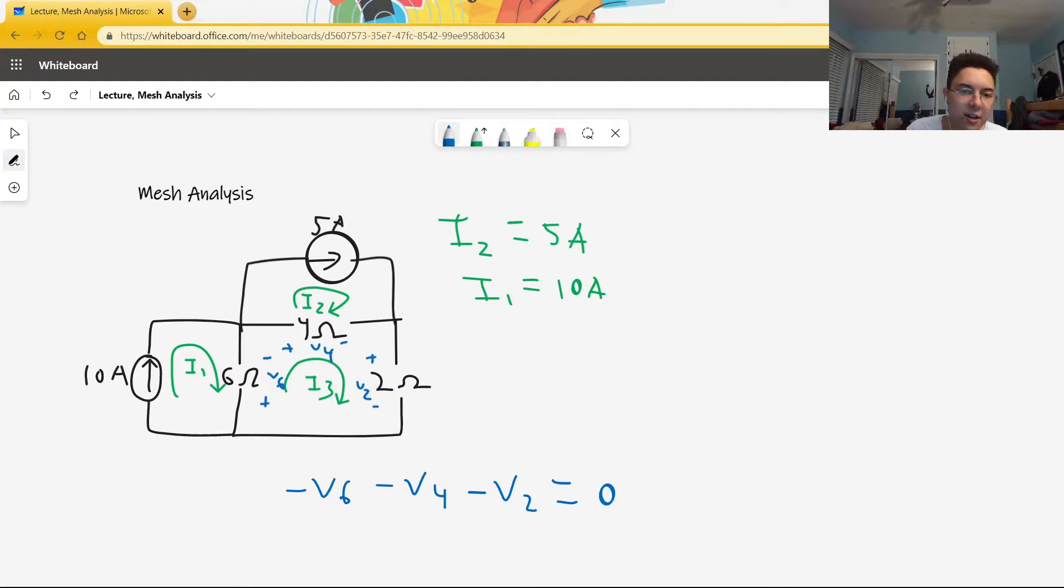Now, you can see that there are two currents passing through the 6 ohm resistor. There's I3, which travels from the positive to the negative terminal, and I1, which travels from the negative to the positive terminal.